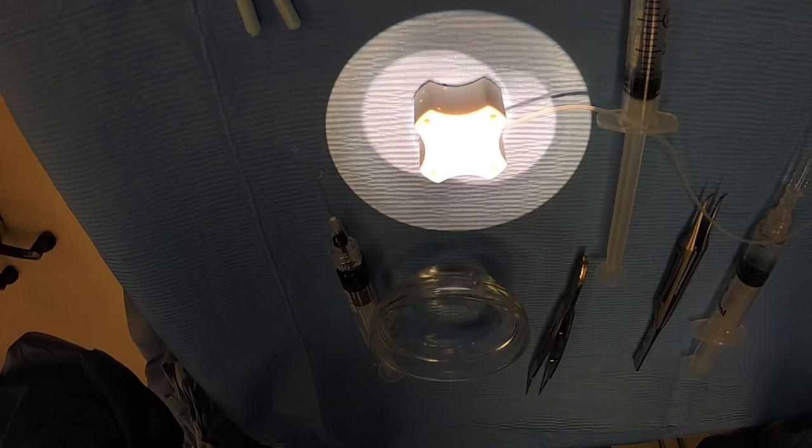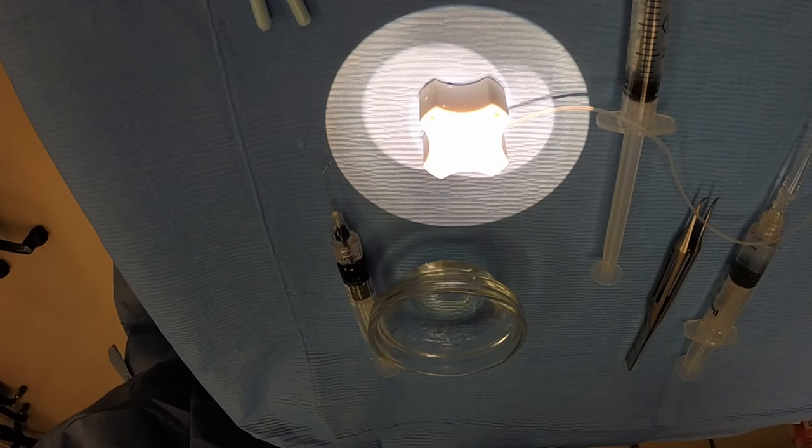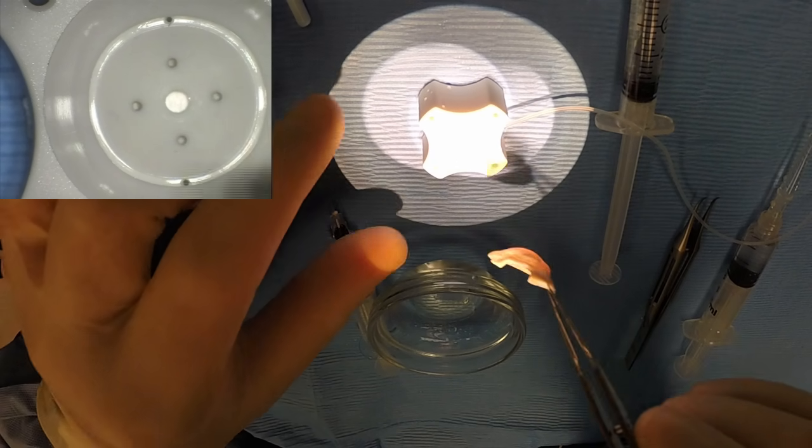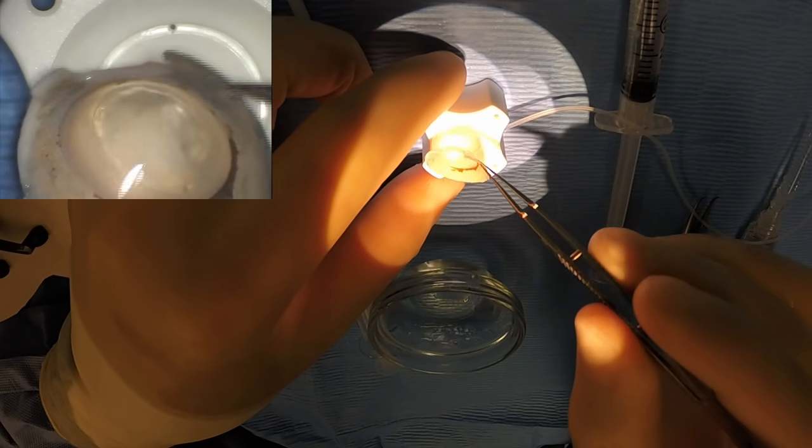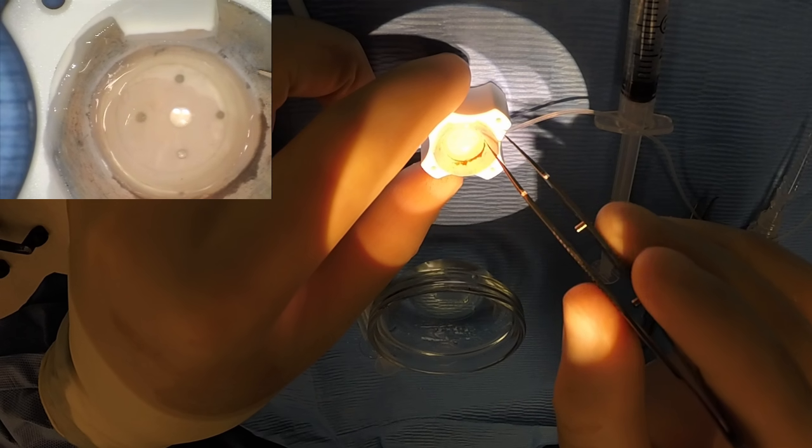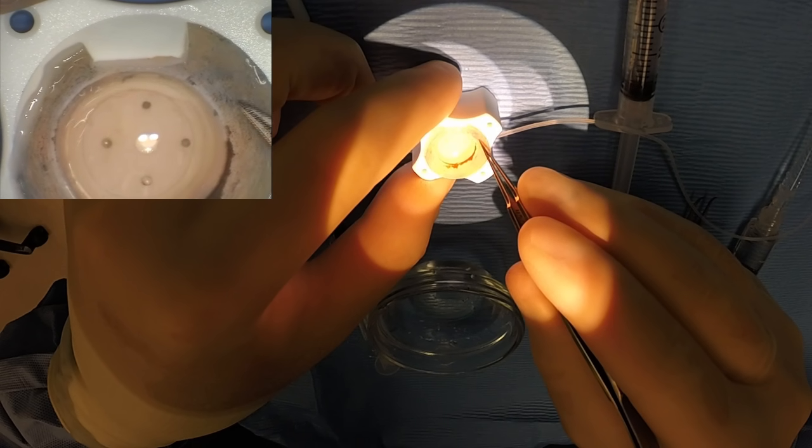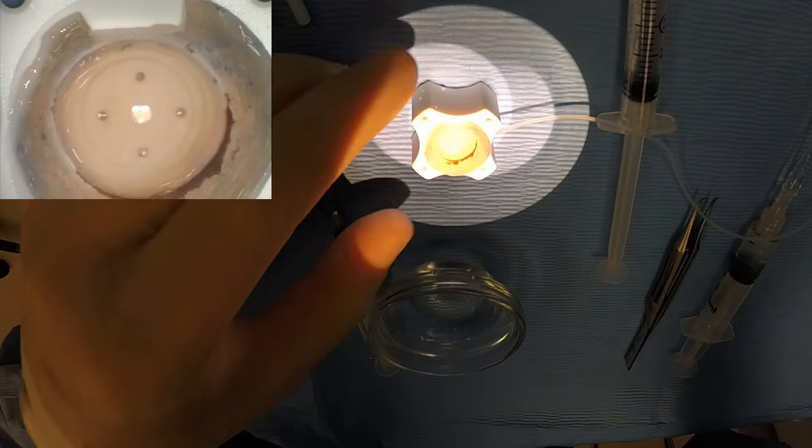Next, I take the donor tissue and place it on a Barron vacuum punch. I have all of my grafts pre-punched at 8mm by the eye bank and they remove the peripheral skirt, so I know all I have here is the 8mm donor.